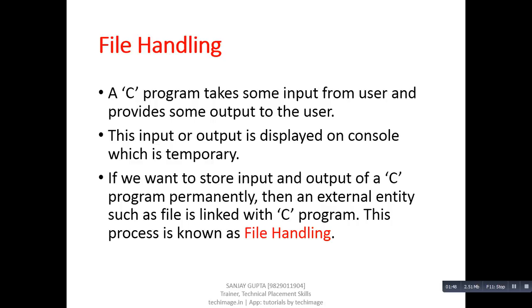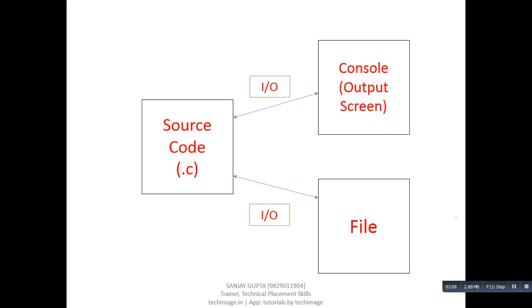So if you want to store the input or output of a C program permanently, then an external entity such as a file is linked with the C program. This process is known as file handling. The file is capable of storing data permanently inside the hard disk, so if we use the concept of file handling in a program then we can implement that program in a real-life situation.